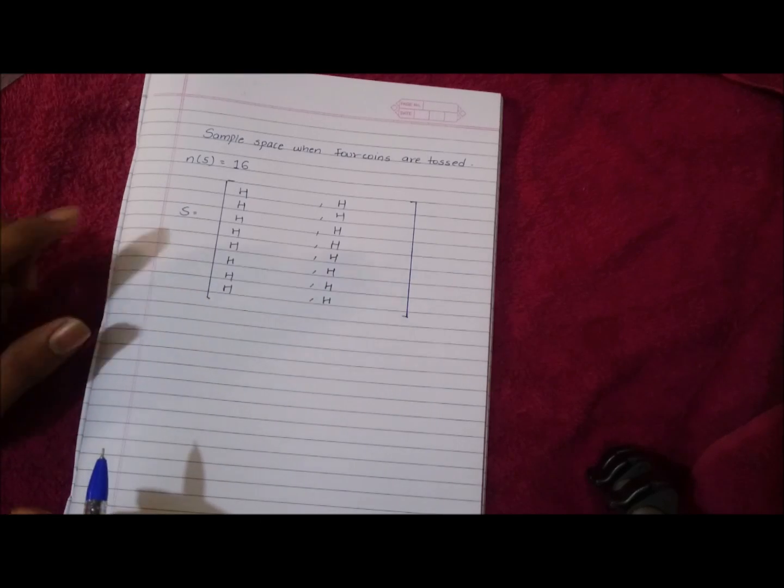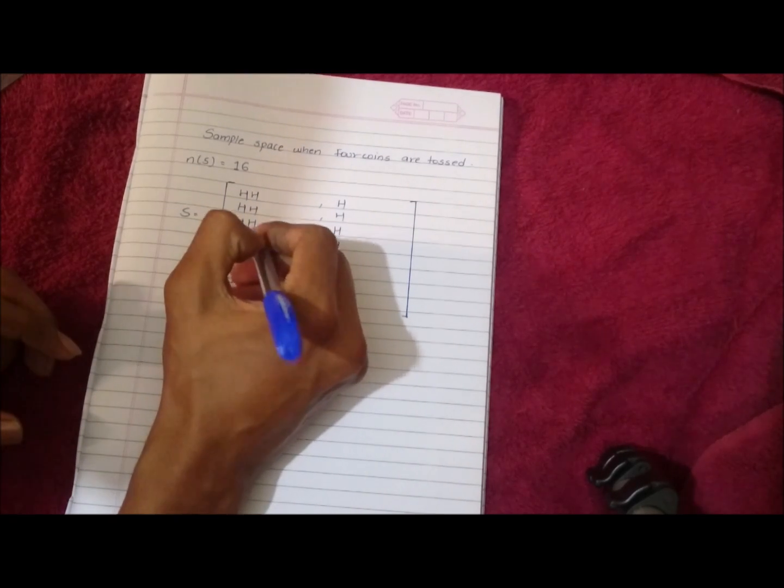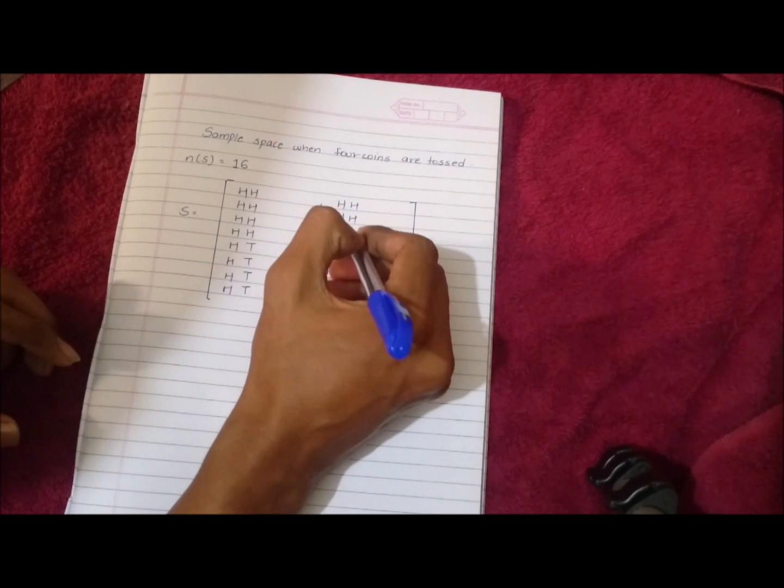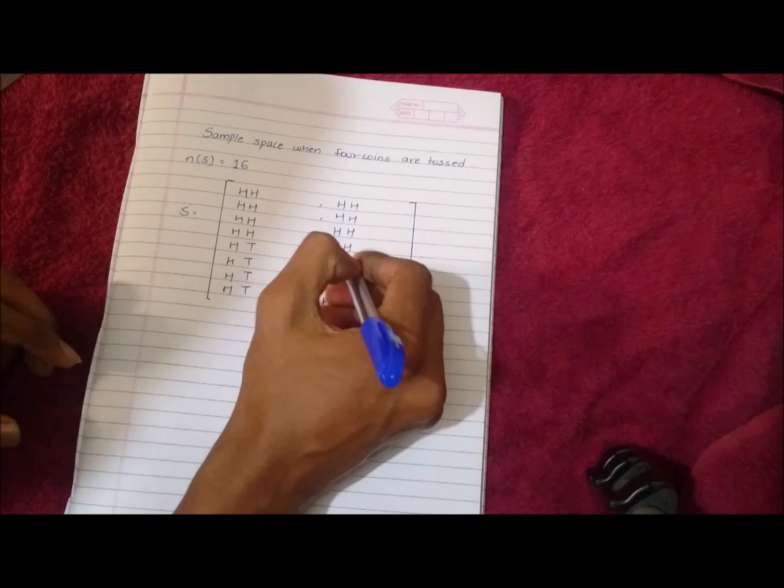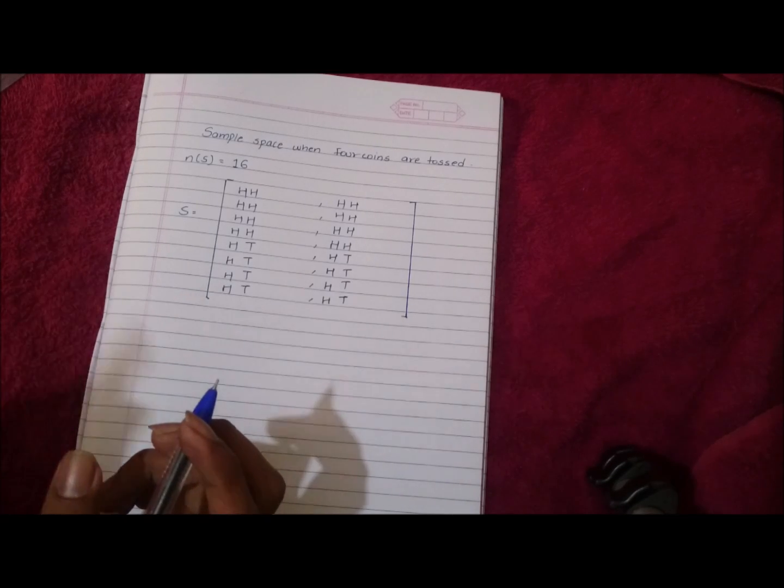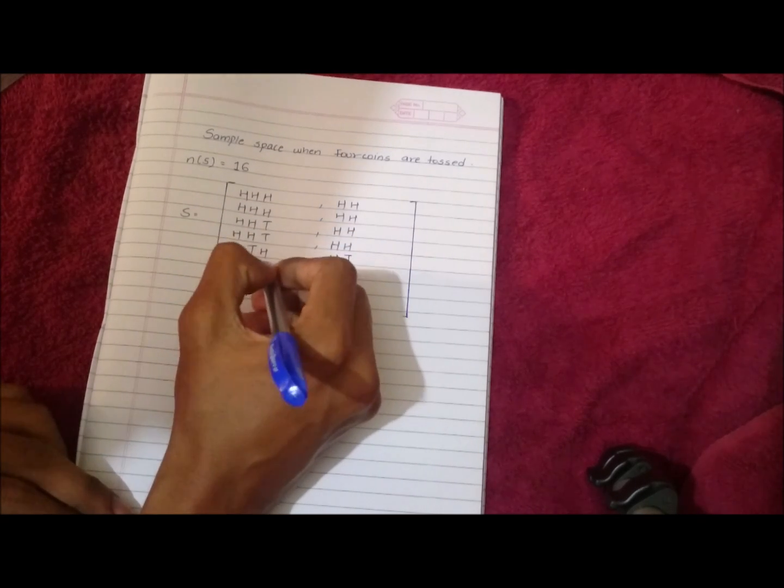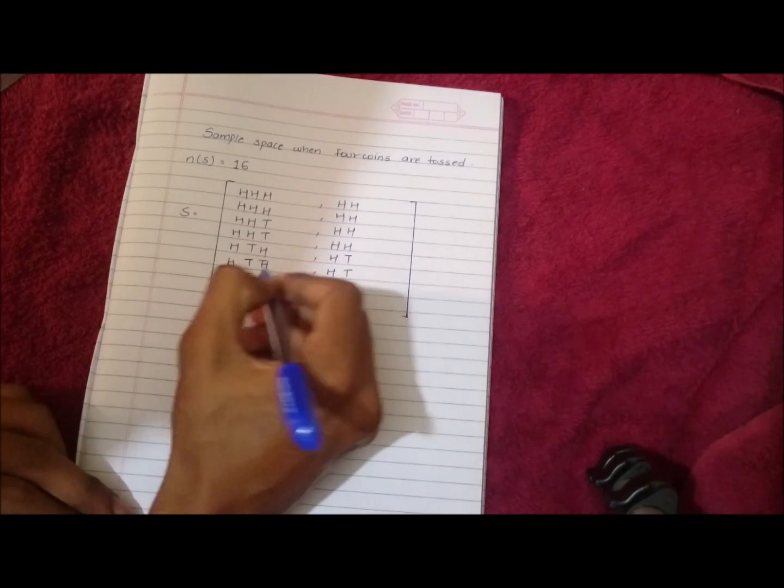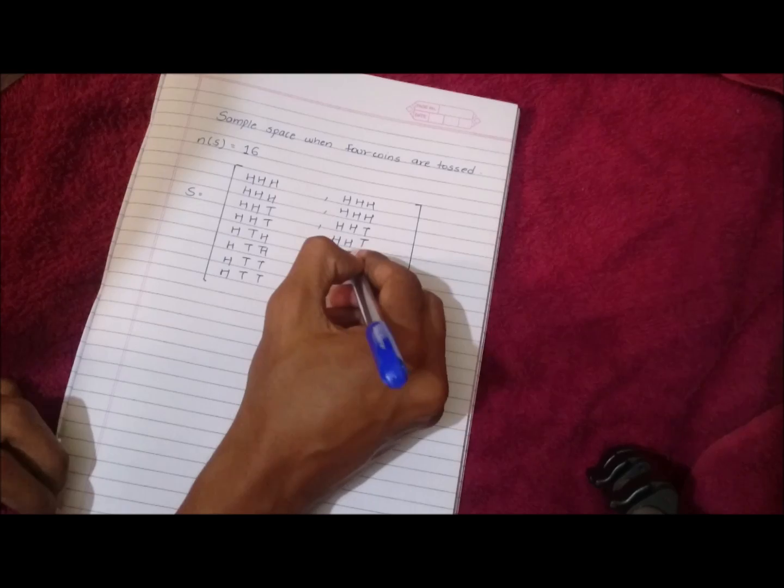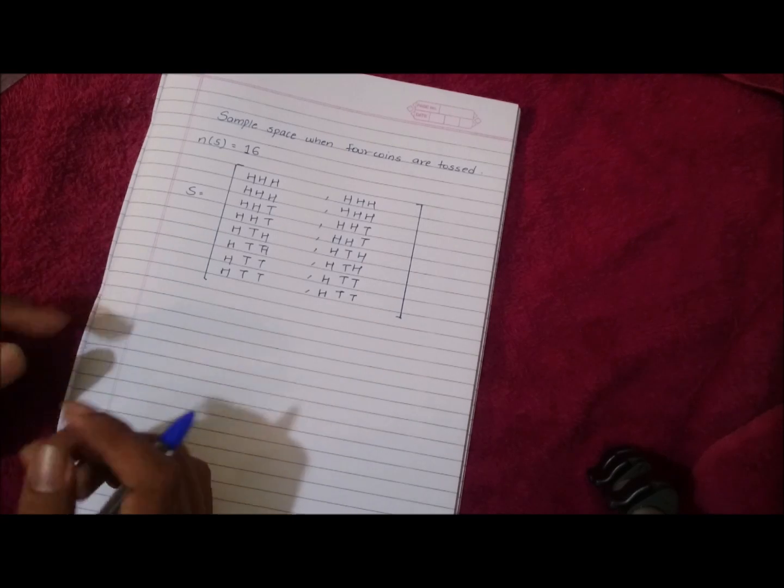Now in the second step we have to write four H and four T's. In the third step you have to write two H and two T's. In the fourth and the final step we have to write one H and one T.